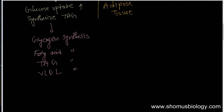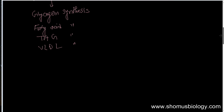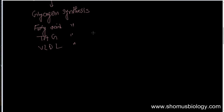VLDL synthesis also takes place — all these structures start to form because we have glucose, meaning we have all the energy we need. We are storing glucose as glycogen for future use and as triacylglycerols in the adipose tissue. The glycogen synthesis, fatty acid synthesis, TAG, and VLDL synthesis all take place in the liver, the most important organ for metabolism in our body.